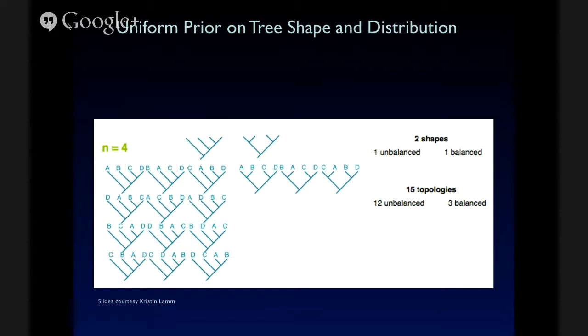So, let's look at a uniform prior on tree shape in the case where we have exactly four taxa and rooted trees. We have two shapes. On the right, we have a perfectly balanced shape, and on the left, we have a perfectly unbalanced shape. And when we label these shapes with possible arrangements of tip taxa, we have 15 possible topologies, and 12 of those are unbalanced. Again, on the left, and three balanced on the right.